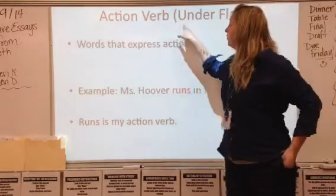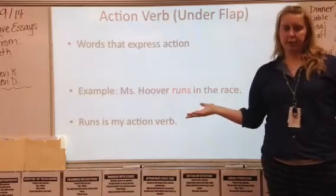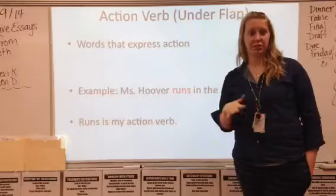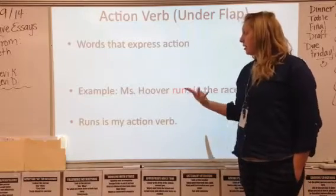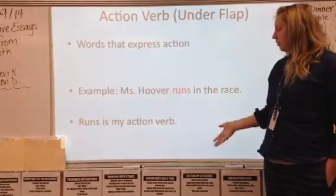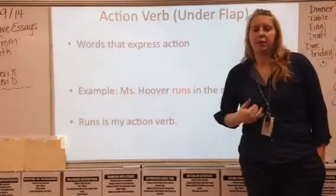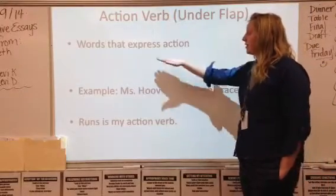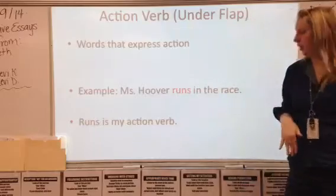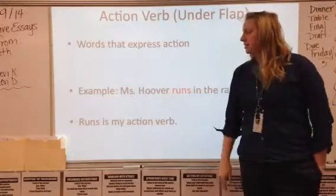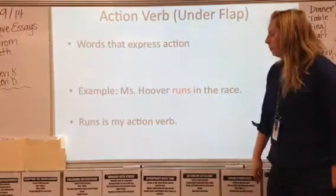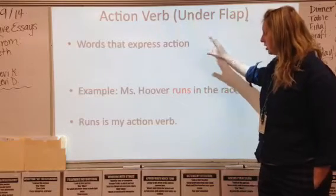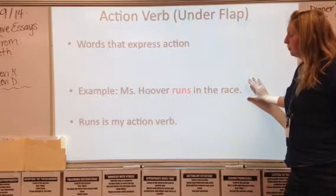So under your action verb flap, you're going to write the following. An action verb — you should have heard it before, it's pretty common, just a good review. It's words that express action. For example, Miss Uber runs in the race. Runs would be my action verb because it is expressing what action I'm doing. So run is my action verb. Underneath your action verb flap, you need: words that express action, and the example of me running the race.